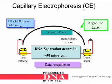An argon-ion laser is used for excitation. Then you have the inlet, which is the cathode, and the outlet, which is the anode. A charge of 15 kilovolts is applied, and the capillary is filled with a polymer solution.